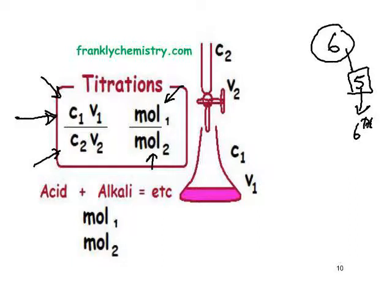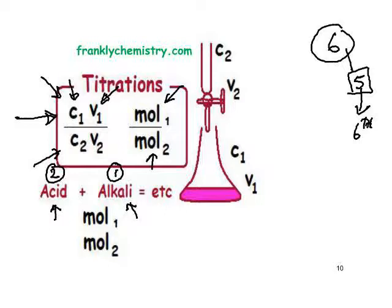We assign one to each chemical and two to the other. It's simpler to assign 1 to the chemical we require information about — here the ammonia, the alkali. So C1 is the concentration of the ammonia solution, V1 is the volume of the ammonia solution, and mole 1 is the number of moles of ammonia in the balanced equation. Let's go back and collect the information.